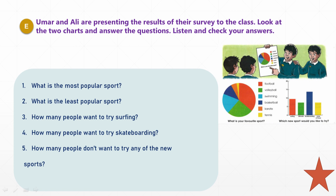Let's answer the questions. What is the most popular sport? The most popular sport shown by the class survey was football. What is the least popular sport? The least popular sport — the one least practiced by students — was tennis.